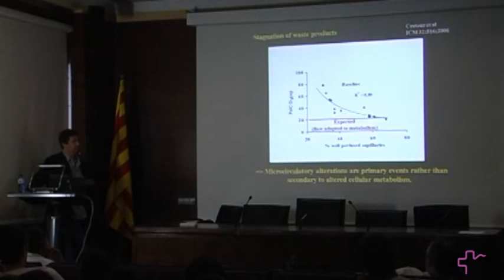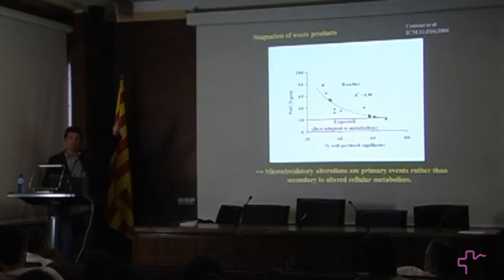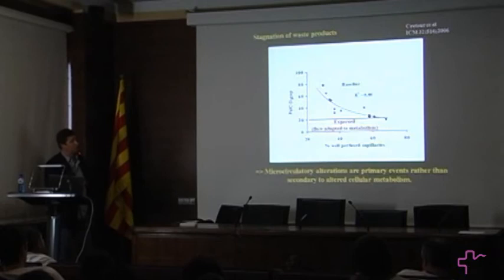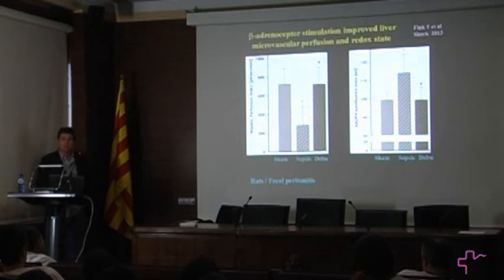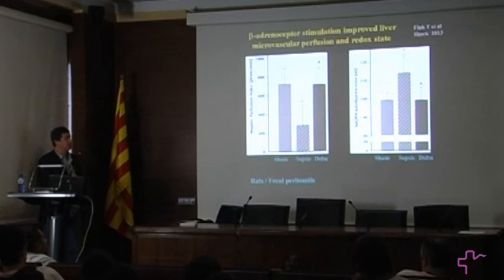CO2 production is not decreased: if metabolism were altered first, you would have shutdown of metabolism, consuming less oxygen and producing less CO2. But the gradient of CO2 is increased with impaired flow, meaning cells are still trying to survive and produce CO2. Also, when you improve superfusion with dobutamine, there is improvement in the redox state. And in patients, the better you improve the microcirculation, the better you decrease lactate levels later on — so this appears to be a primary event.